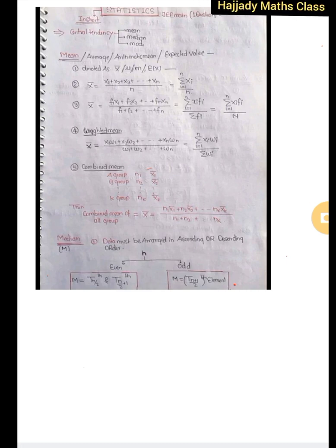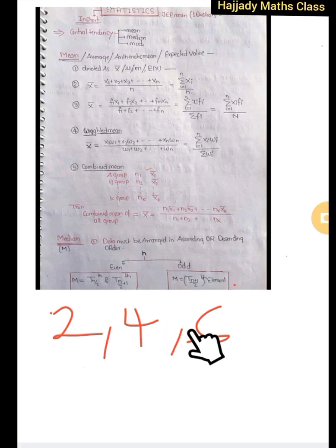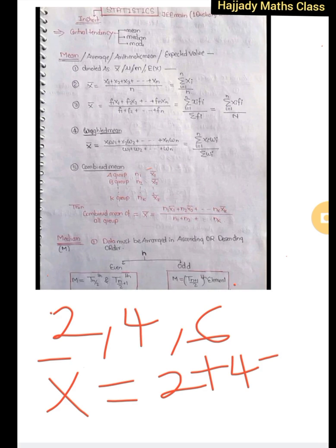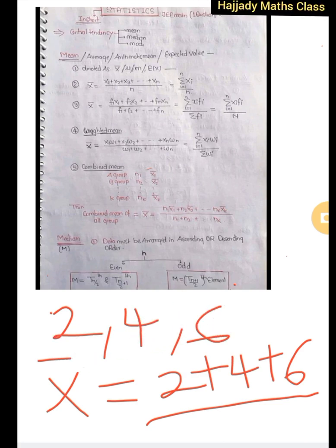For example, you are given the number of students in several classes: 2, 4, and 6. We are asked to calculate the mean, which is the average. These are your x1, x2, x3. To calculate the mean, x-bar equals the addition of everything: 2 plus 4 plus 6, all over n. Our n is the number of observations — we have three — so we divide by 3.